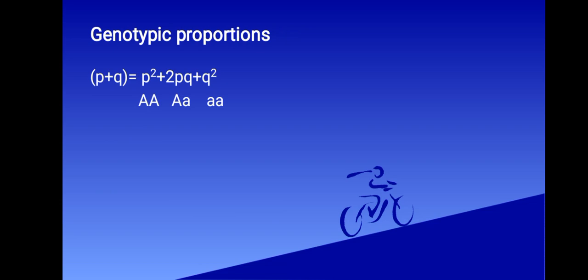This will end up giving us a genotypic proportion. We have (p+q)² is going to give us p² + 2pq + q². You can work this out using a Punnett square. It's going to take you there step by step.